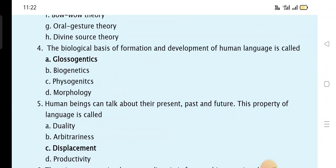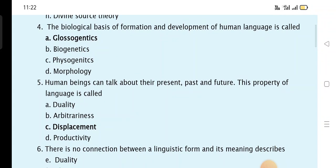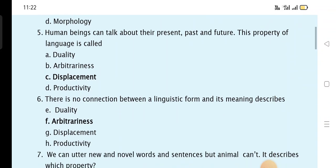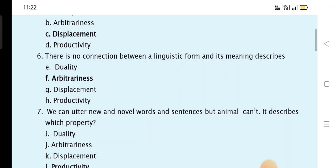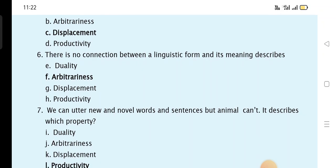The biological basis of the formation and development of human language is called glossogenetic. Human beings can talk about their present, past, and future, and this property of language is called displacement. There is no connection between a linguistic form and its meaning describes arbitrariness.